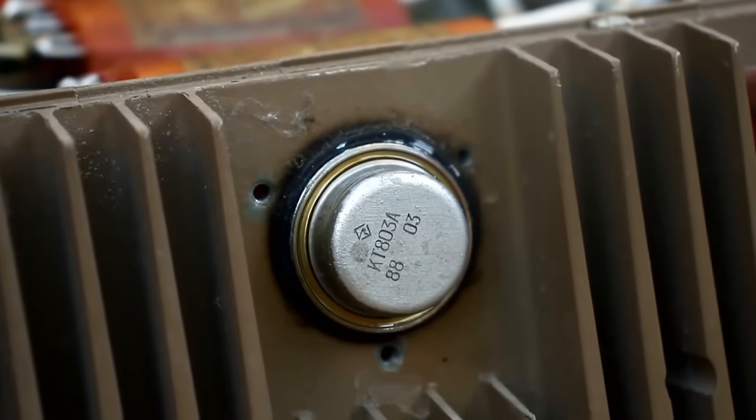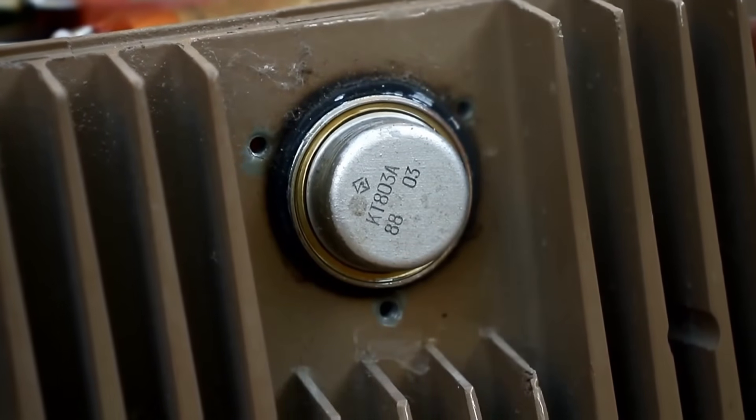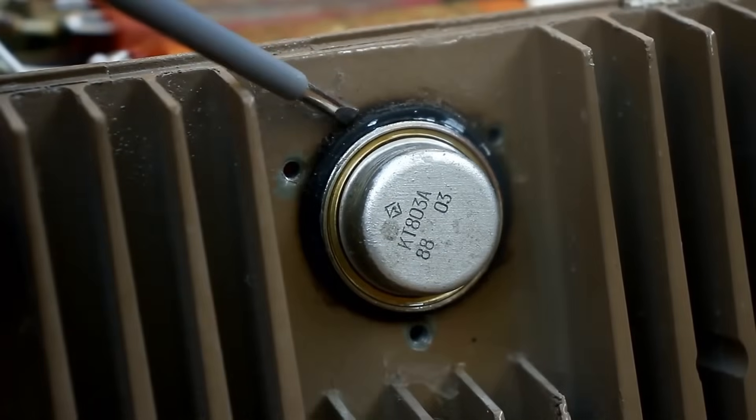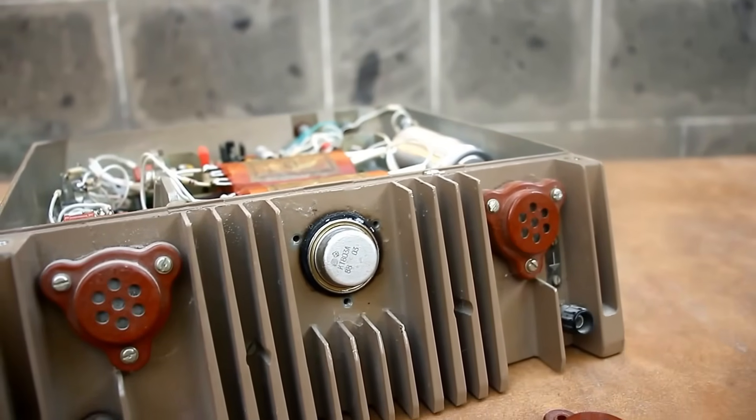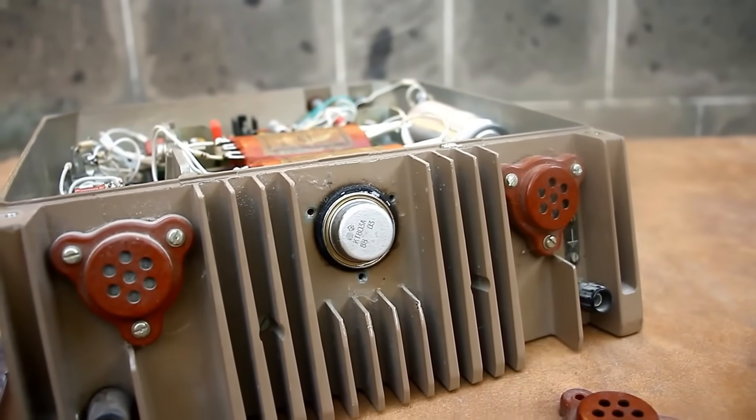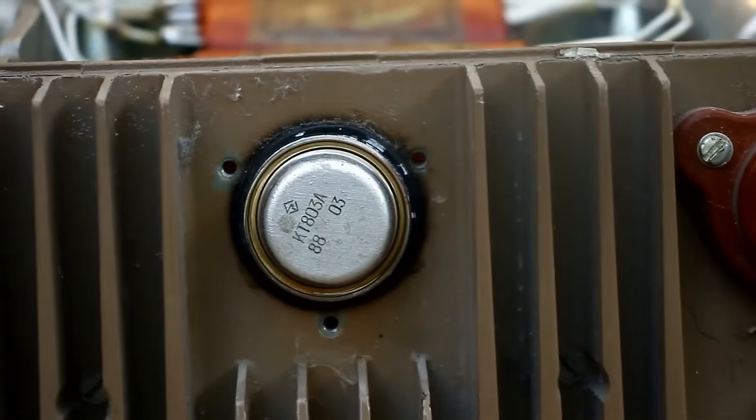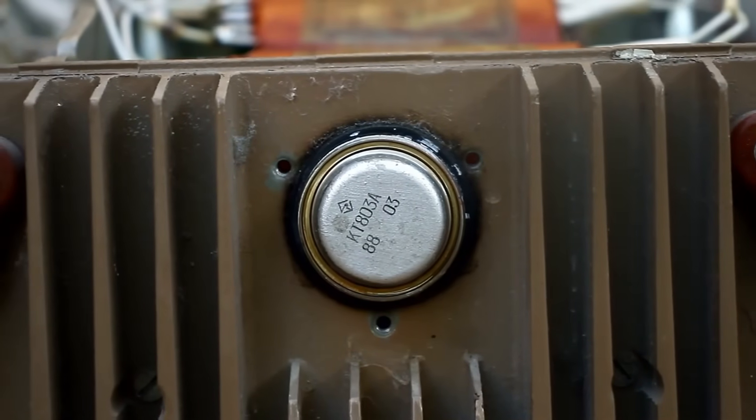These are silicon and quite powerful transistors, KD803. Under them, sealing rubber rings are installed for moisture protection. The collector current of each transistor is 10A. The power dissipated on the collector is 60W, meaning the power unit has a significant safety margin.